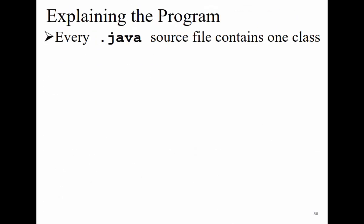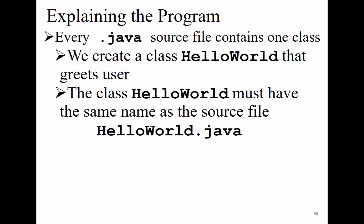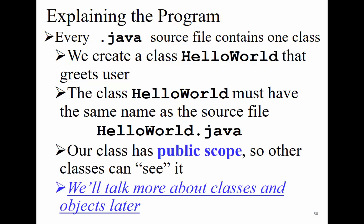This program contains only one class, HelloWorld, stored in one source file HelloWorld.java. The scope of this class is public, which means any class can talk to our class. You can create a class as private to limit the scope of access, but for this course, most of the classes we create will be public class. Inside this hello.java, there is only one class, and the name of the file corresponds to the name of the class inside it.